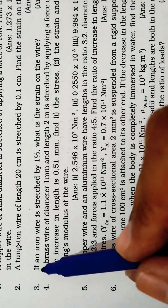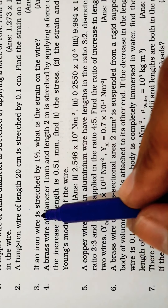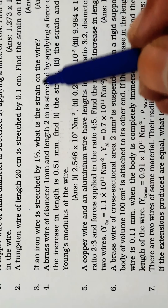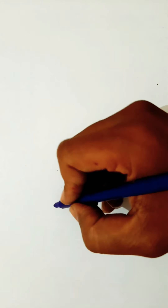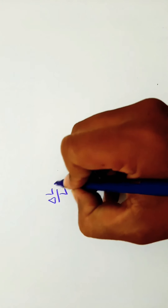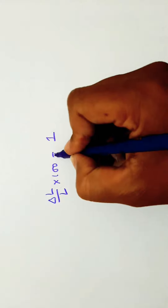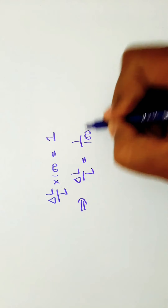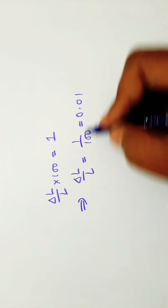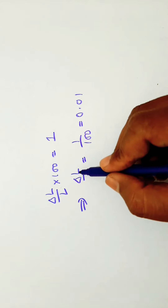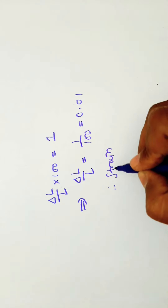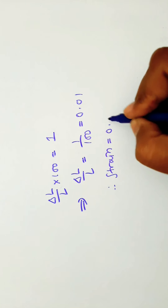Problem 3: If an iron wire is stretched by 1%, what is the strain on the wire? Since ΔL/L × 100 = 1, we get ΔL/L = 1/100 = 0.01. Therefore strain = change in length by original length = 0.01.